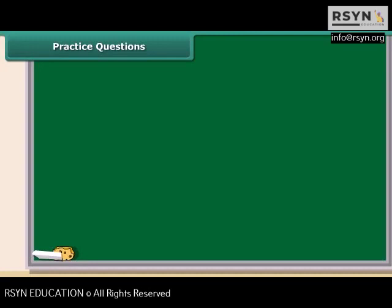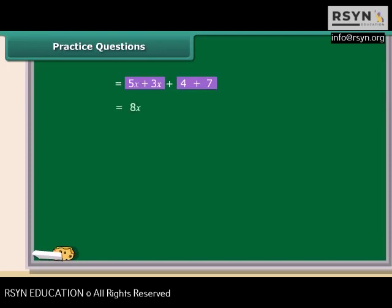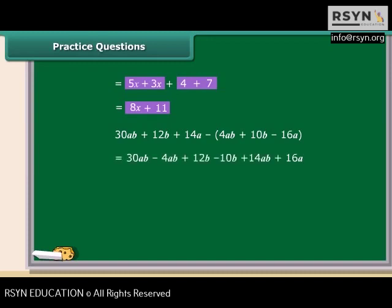We have two algebraic expressions: 5X plus 4 and 3X plus 7. Let us find their sum. Identify like terms and then add them. 5X and 3X are like terms, and so are 4 and 7. Adding 5X and 3X gives 8X; adding 4 and 7 gives 11. Therefore, the sum is 8X plus 11. Now, to subtract 4AB plus 10B minus 16A from 30AB plus 12B plus 14A, we use the same criteria as addition — bring like terms together, taking into consideration the sign of the terms. On rearranging, we get 26AB plus 2B plus 30A.